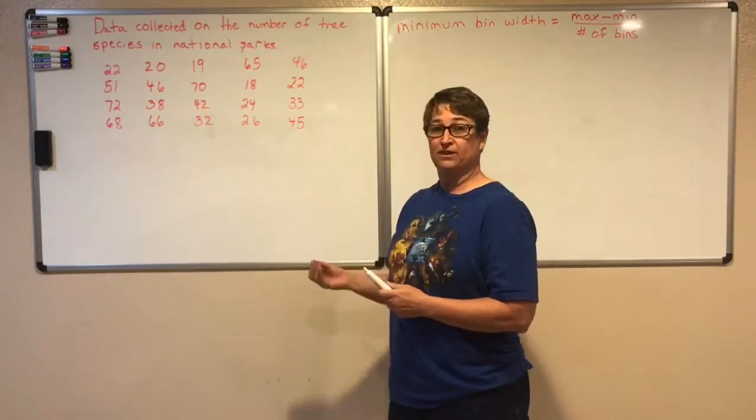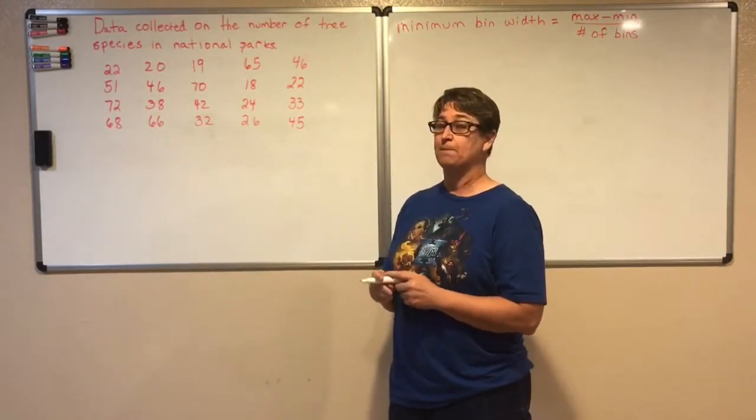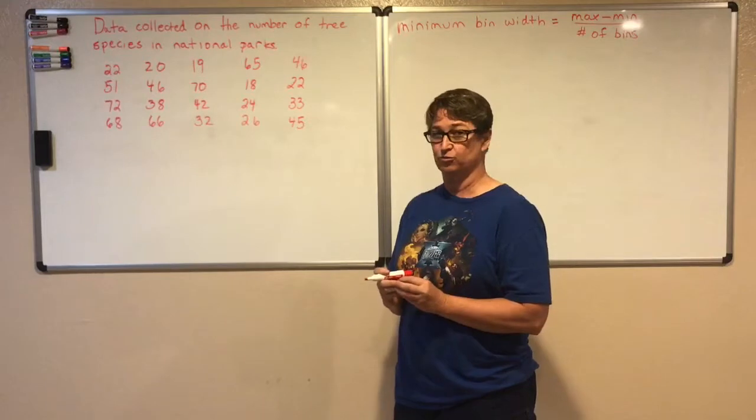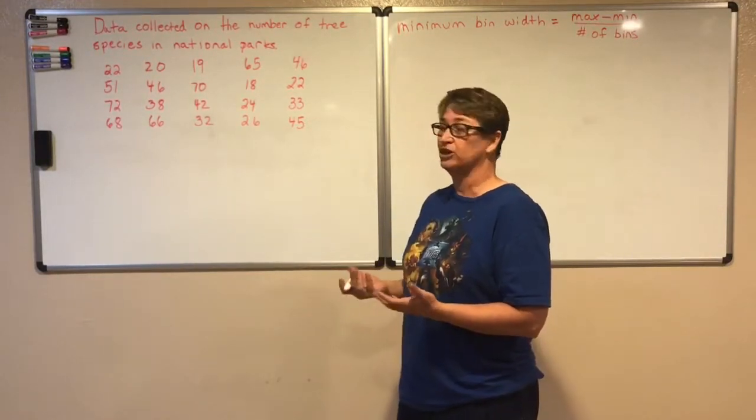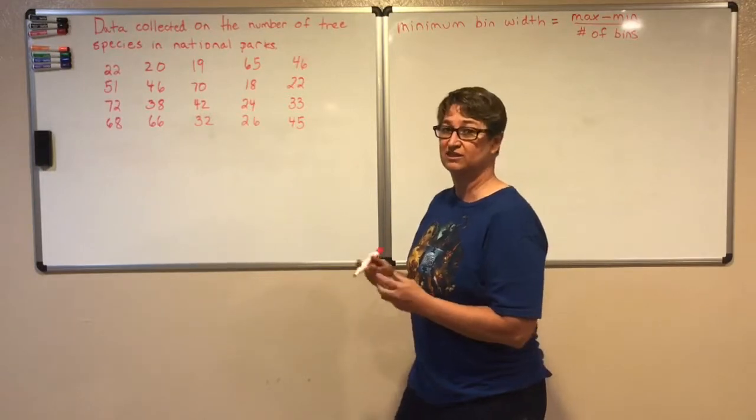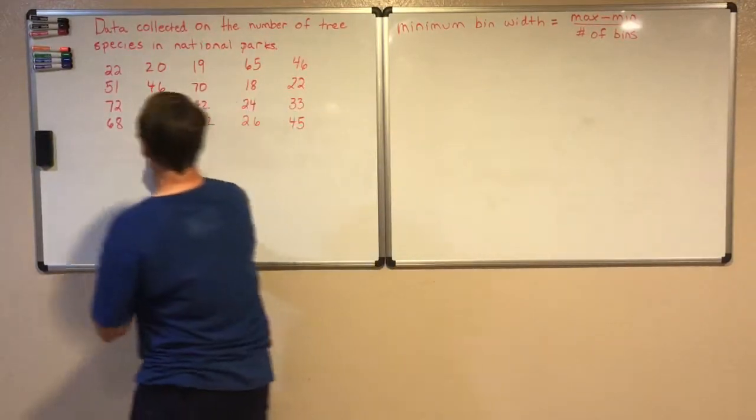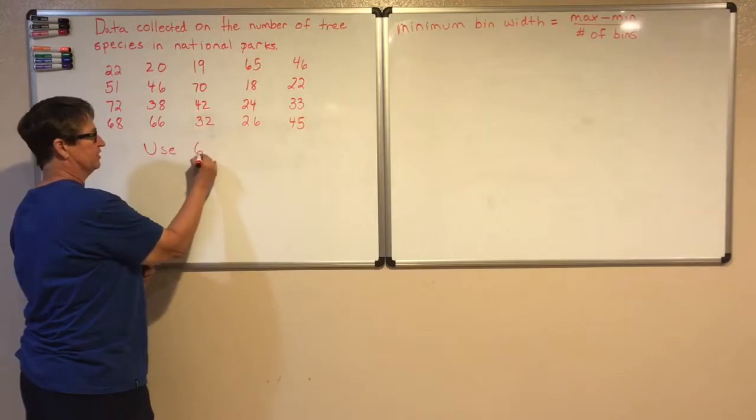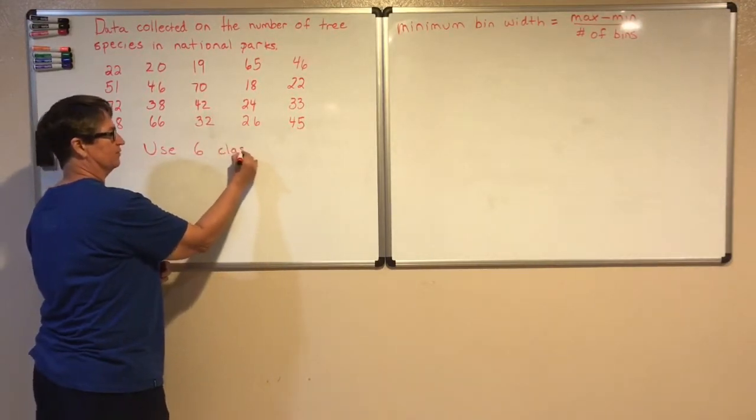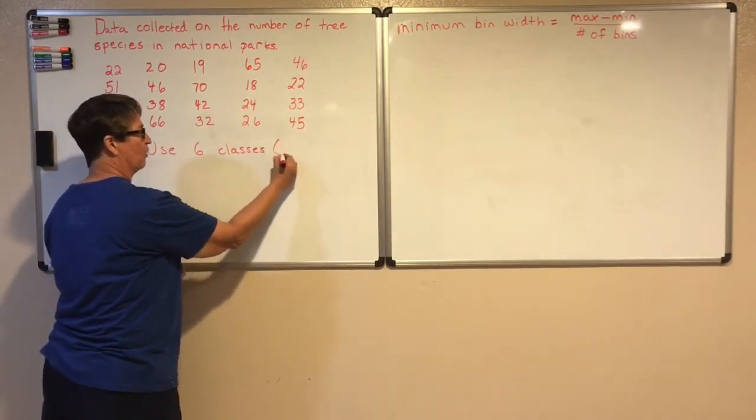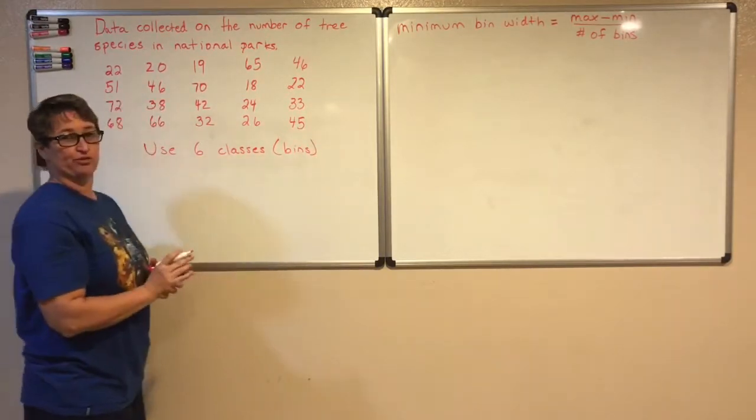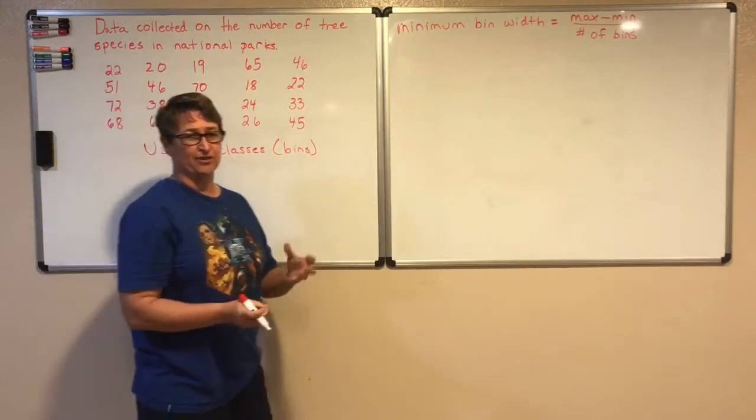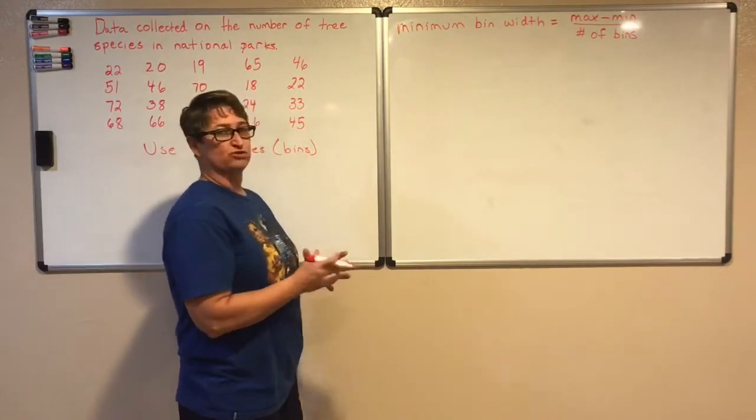When we begin this we need to first know how many bins or classes we're going to use. In this particular problem we're going to choose to use six classes. It's kind of an arbitrary thing depending on the data, so we'll choose six.